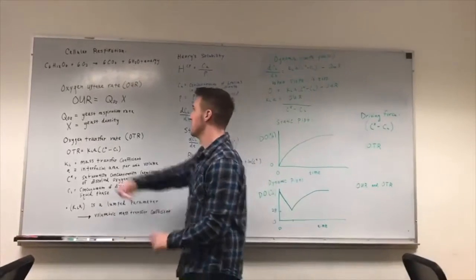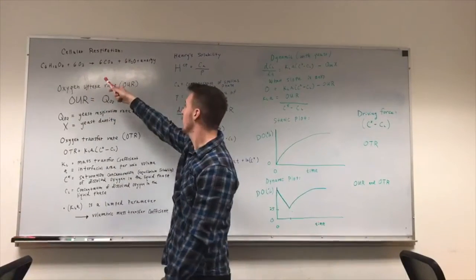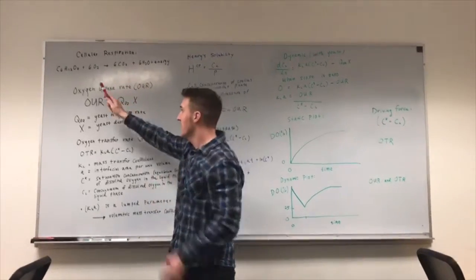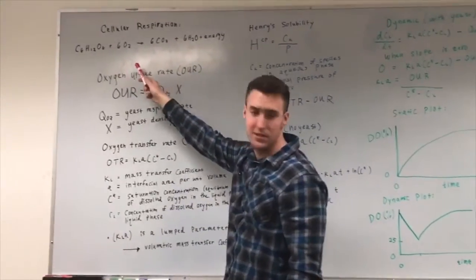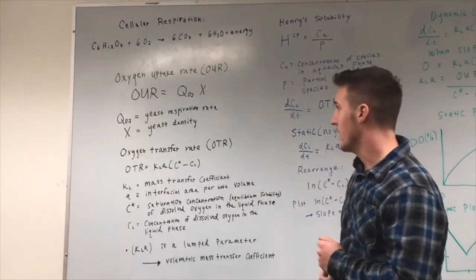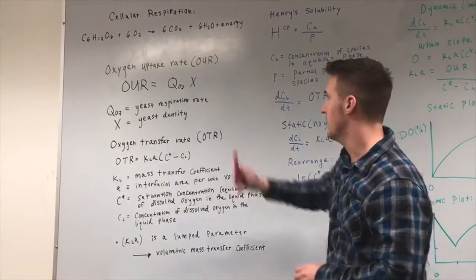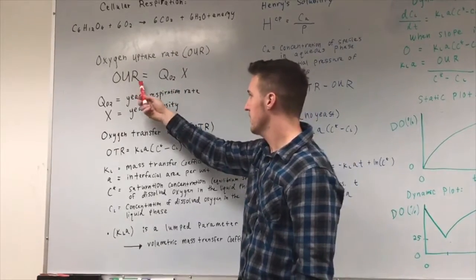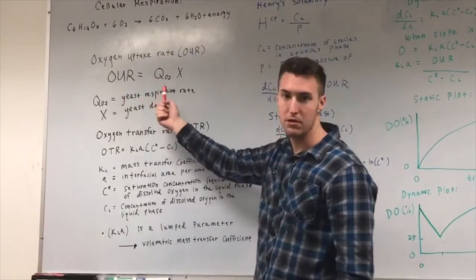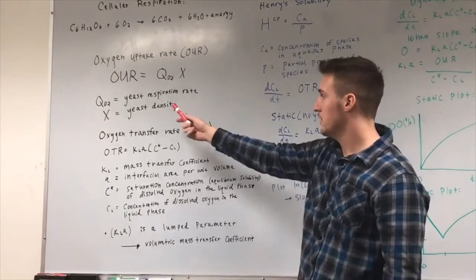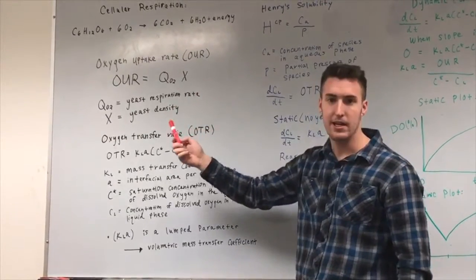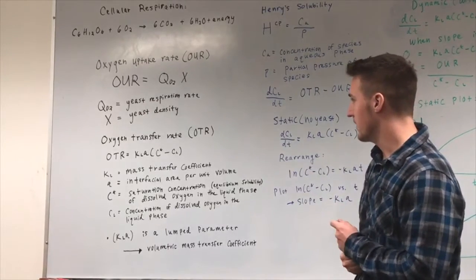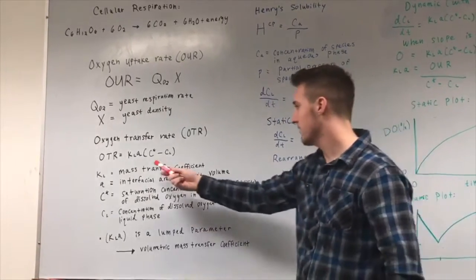Yeast operate according to the cellular respiration equation, using glucose and oxygen to produce energy. The yeast oxygen uptake rate formula is OUR equals QO2 times X, where QO2 is the yeast respiration rate and X is the yeast density.